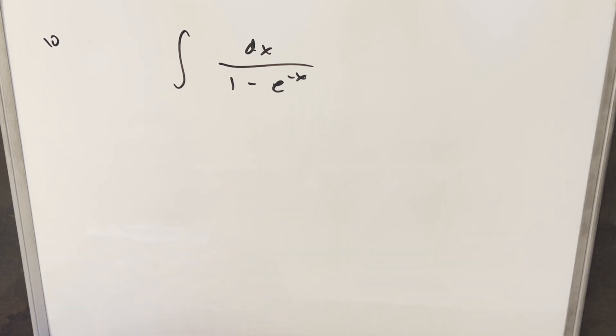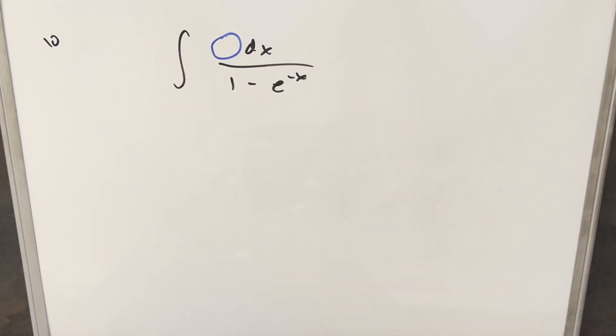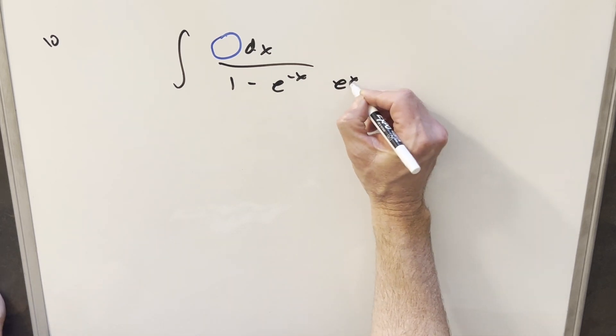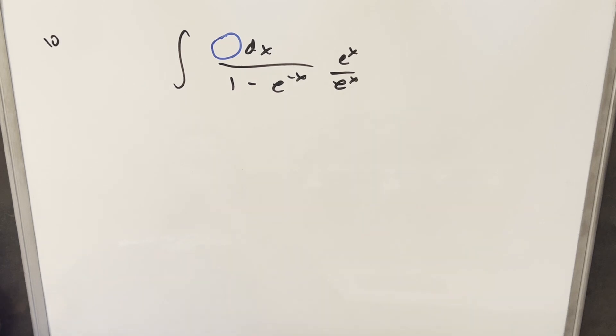Okay, and typically with problems like this, I really want to do a u-substitution, and what I need is something in the denominator. We've got nothing right now, but it's pretty easy to create that. I can just multiply by 1 by multiplying in e to the x over e to the x.